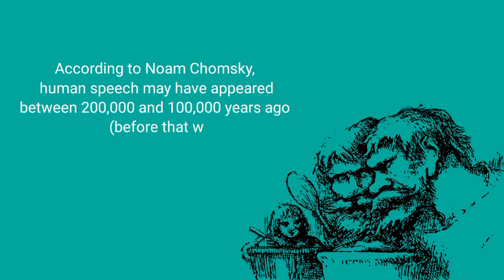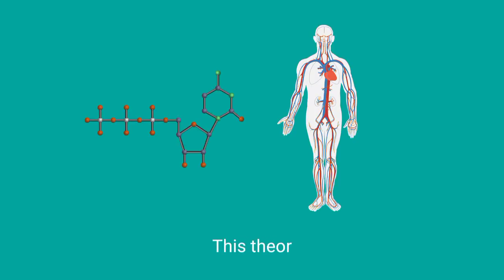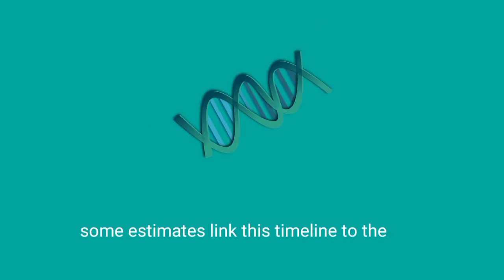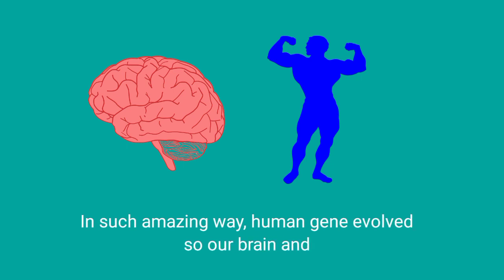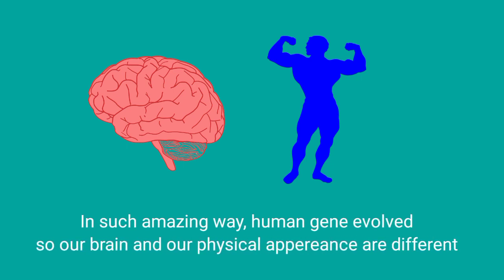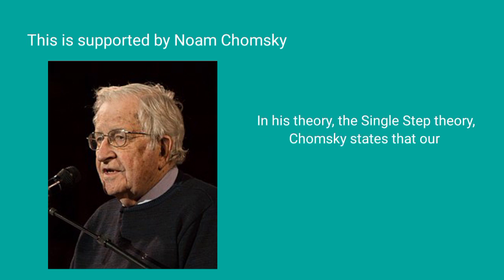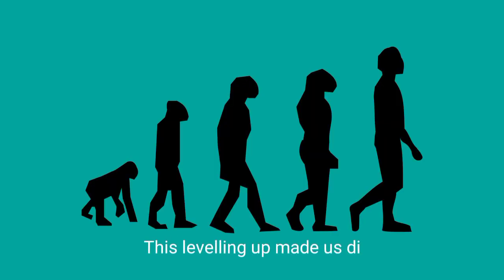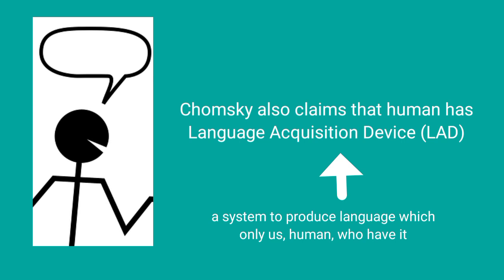According to Noam Chomsky, human speech may have appeared between 200,000 and 100,000 years ago. The next theory is the genetic source theory. This theory explains more about how our physical body changes. Some estimates link this timeline to the development of the FOXP2 gene, also known as the language gene. In an amazing way, human genes evolved so that our brain and physical appearance changed. This is supported by Noam Chomsky in his single step theory — Chomsky states that our ancestors had one moment of leveling up, which made us different from other creatures. Chomsky also claims that humans have a language acquisition device.